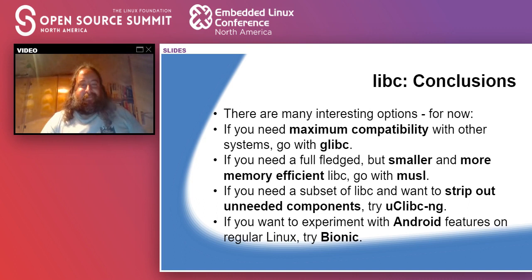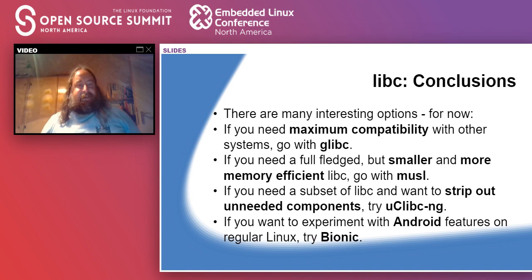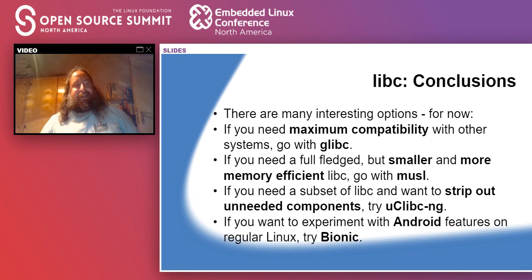So what's the best choice for libc? Again, there's no super clear winner. If you need maximum compatibility with all standards and binary compatibility with the big distributions, you pretty much have to go with glibc. If you need something full-fledged but smaller and more memory efficient, you probably want to go with musl. If all you need is a subset and can strip out unneeded components, uClibc-ng might be an interesting choice because that makes stripping out parts easiest. And Bionic is obviously interesting if you want to experiment with Android features.